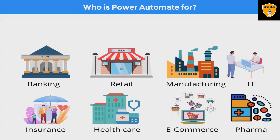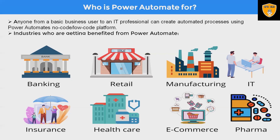Who is Power Automate for? These are the domains where Power Automate can be used: banking and finance, which utilizes this tool for automating tasks in terms of accuracy, saving time, cost, and money. Retail, manufacturing, IT, insurance, healthcare, e-commerce, and pharma domains are all using it. Power Automate is everywhere — all industries and professionals are utilizing this tool for ease of use and for automating tasks so they can reduce man-hours and achieve maximum ROI. Anyone from a basic business user to an IT professional can create automated processes using this no-code, low-code platform.